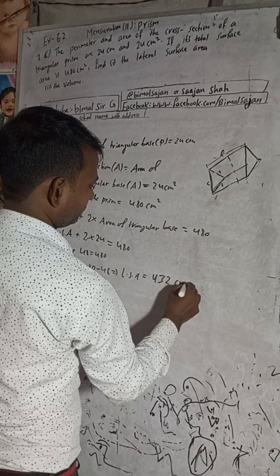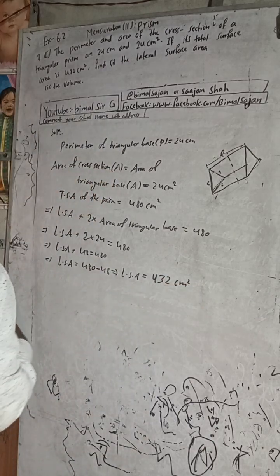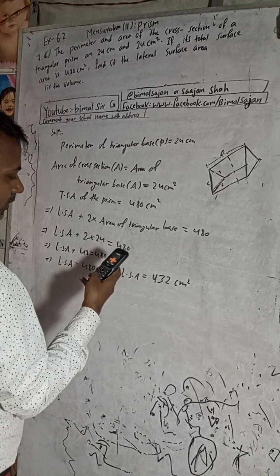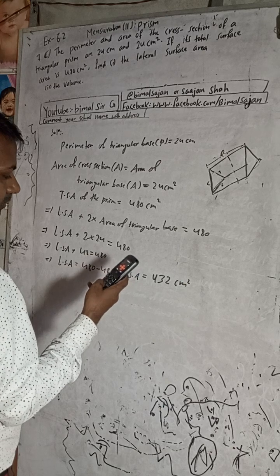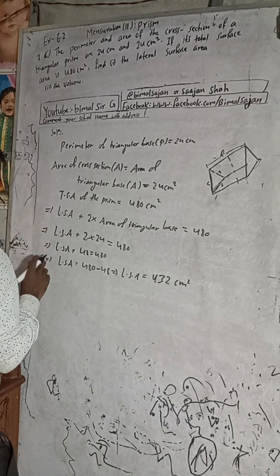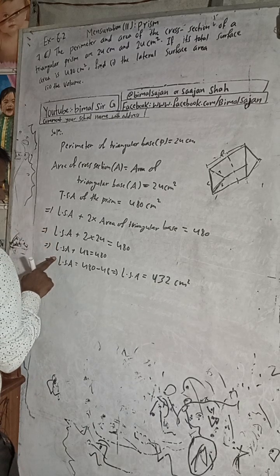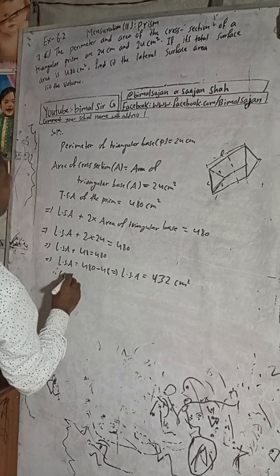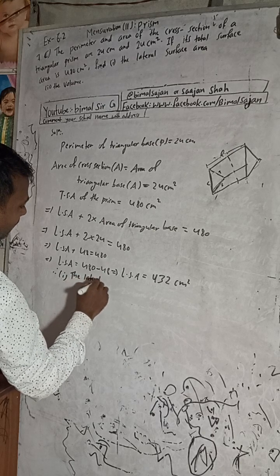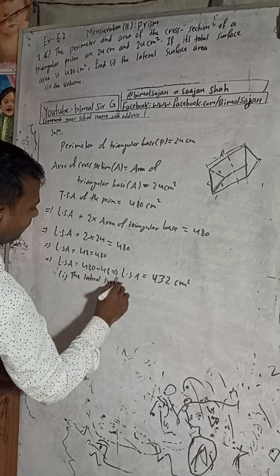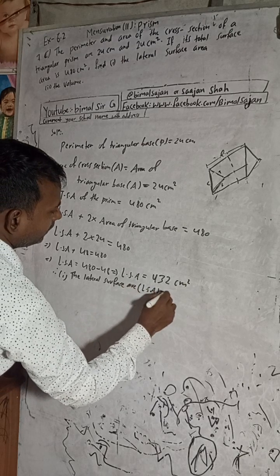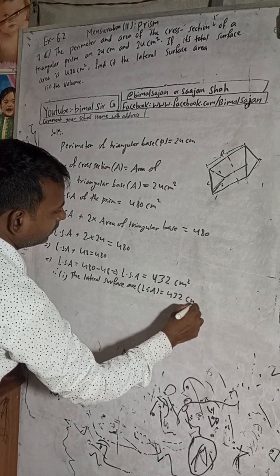480 minus 48 equals 432 cm square. Let me subtract: 480 minus 48 equals 432. Okay. So we got answer number one. Therefore, the lateral surface area is equal to 432 cm square.